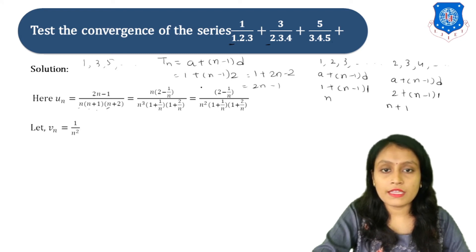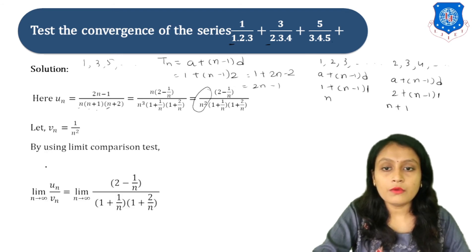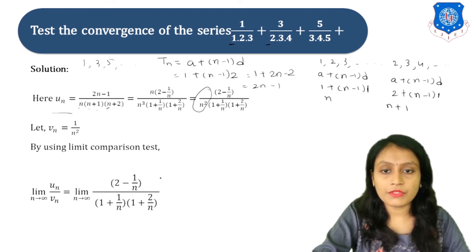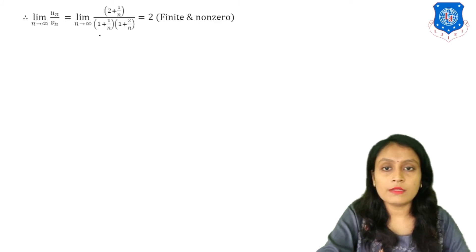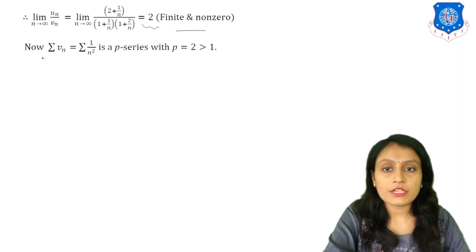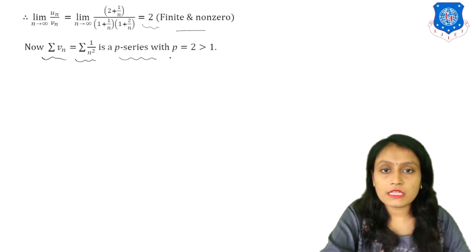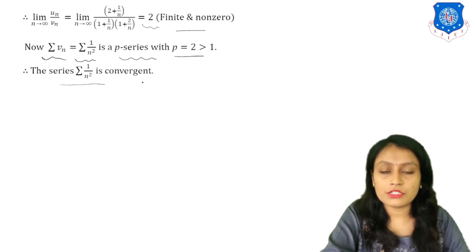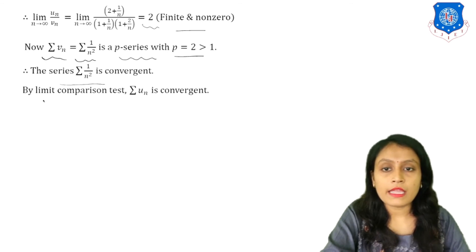We suppose v_n = 1 upon N². Applying the limit N tends to infinity of u_n upon v_n: the 1/N² cancels, leaving (2 − 1/N) upon (1 + 1/N)(1 + 2/N). As N tends to infinity, 1/N → 0, so the limit equals 2 — a finite and non-zero number. Series v_n = 1 upon N² is a P-series with P = 2 greater than 1, so it is convergent by the P-series test. By the limit comparison test, series u_n is also convergent.